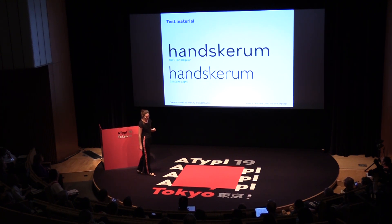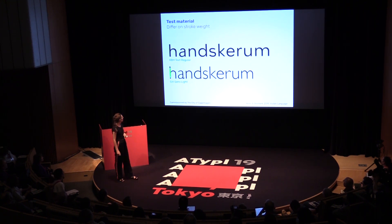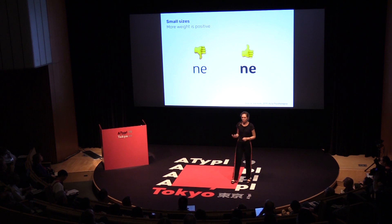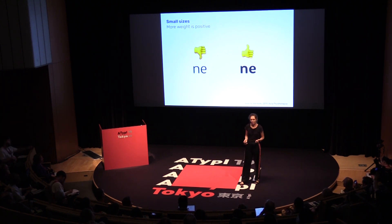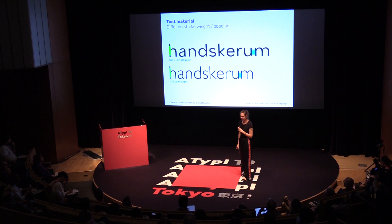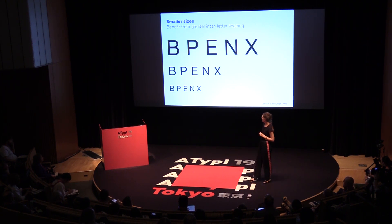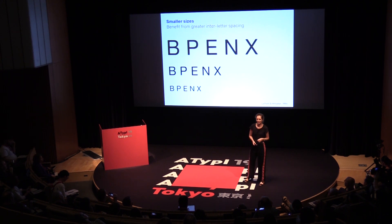So why is that? Looking at the test material, we see a bunch of differences between the two typeface styles. One being weight — in a previous experiment of ours, we found that for small point sizes, lighter weights impair performance compared to bolder weights. That could be one explanation for the reading acuity findings. Another difference is the spacing setting: Gilsons is much tighter spaced than KbH. Previous research has shown that smaller sizes actually benefit from wider spacing, which could also explain the finding.